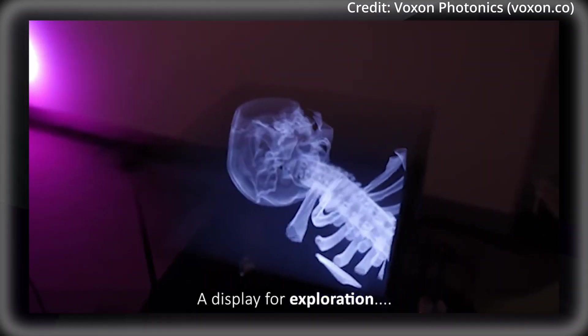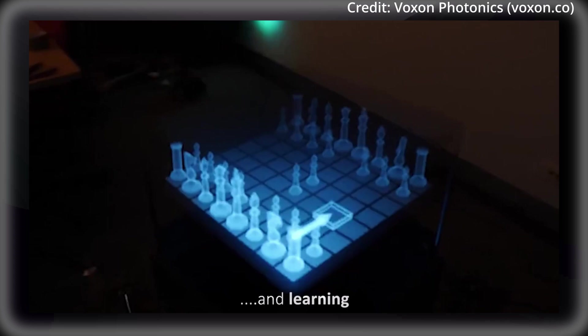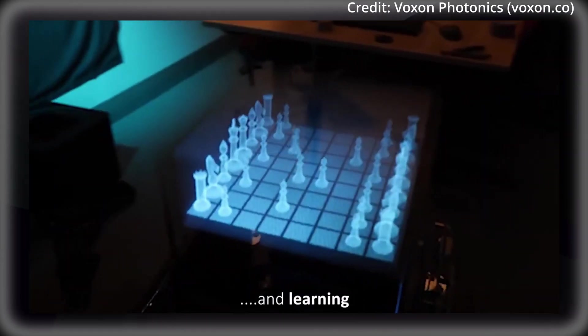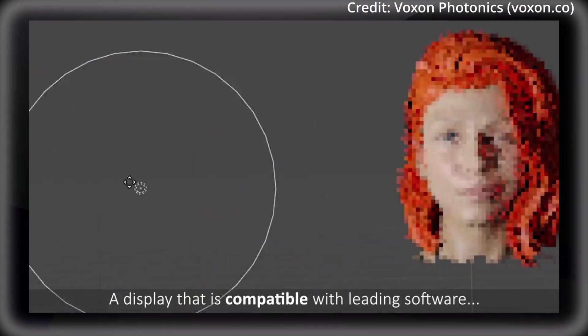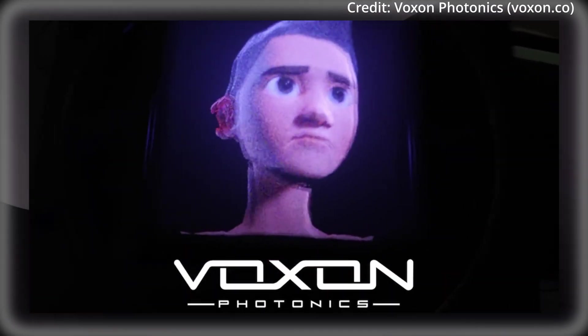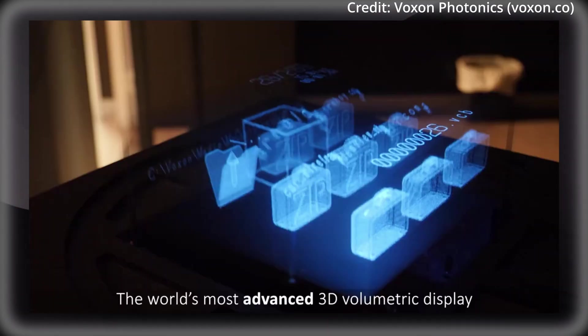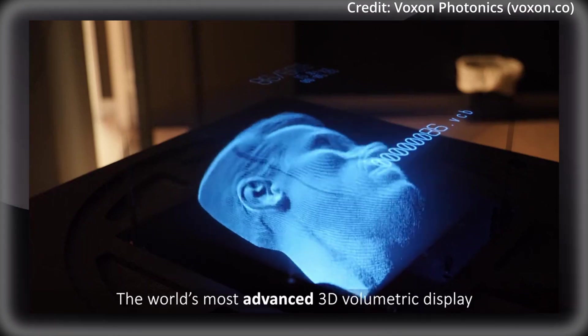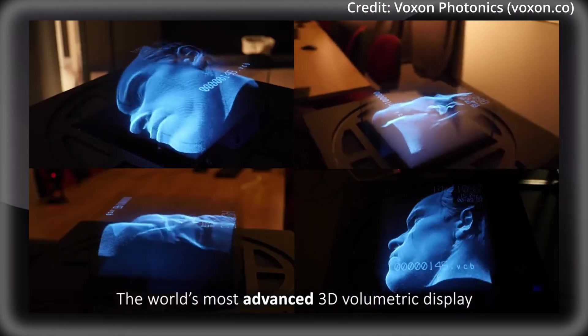For instance, in the medical field, the VX2 is already being used to visualize complex anatomical structures, allowing surgeons to plan procedures with unprecedented precision. This provides a highly detailed 3D view of a patient's organs floating in front of the surgeon, with the ability to manipulate the image in real time.